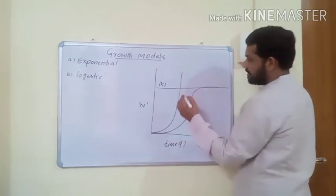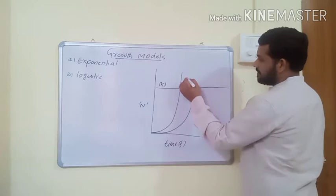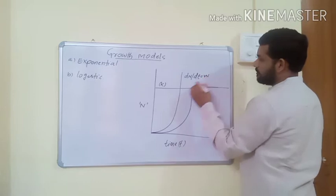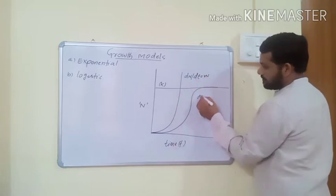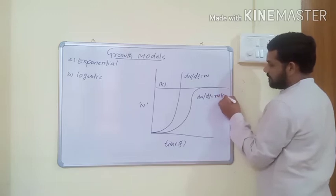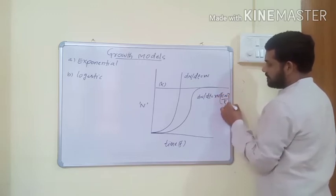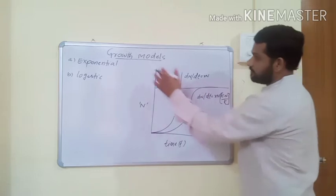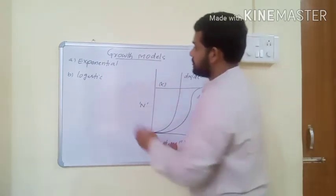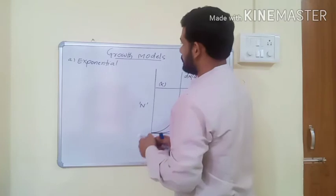This line represents carrying capacity. These are the two formulas for the two types of growth models: dN/dt = rN, and dN/dt = rN(K minus N)/K. The first one is the exponential growth model.